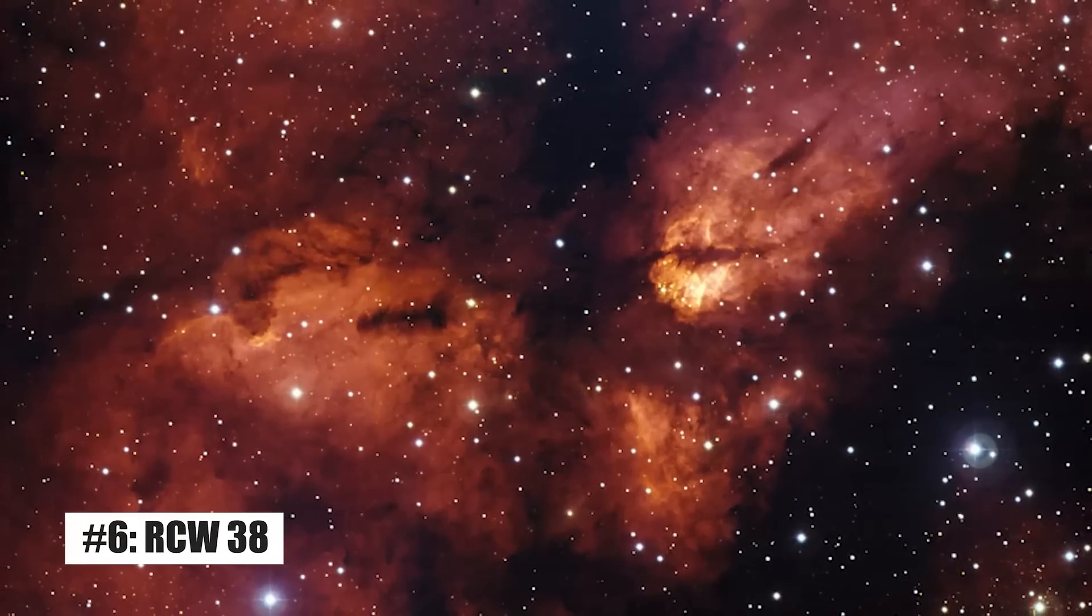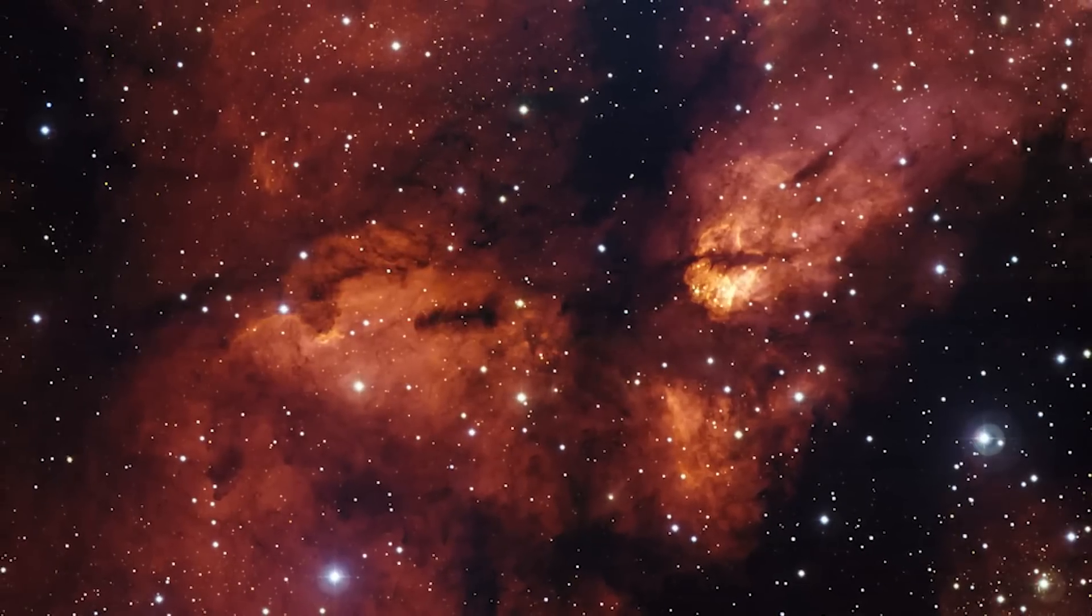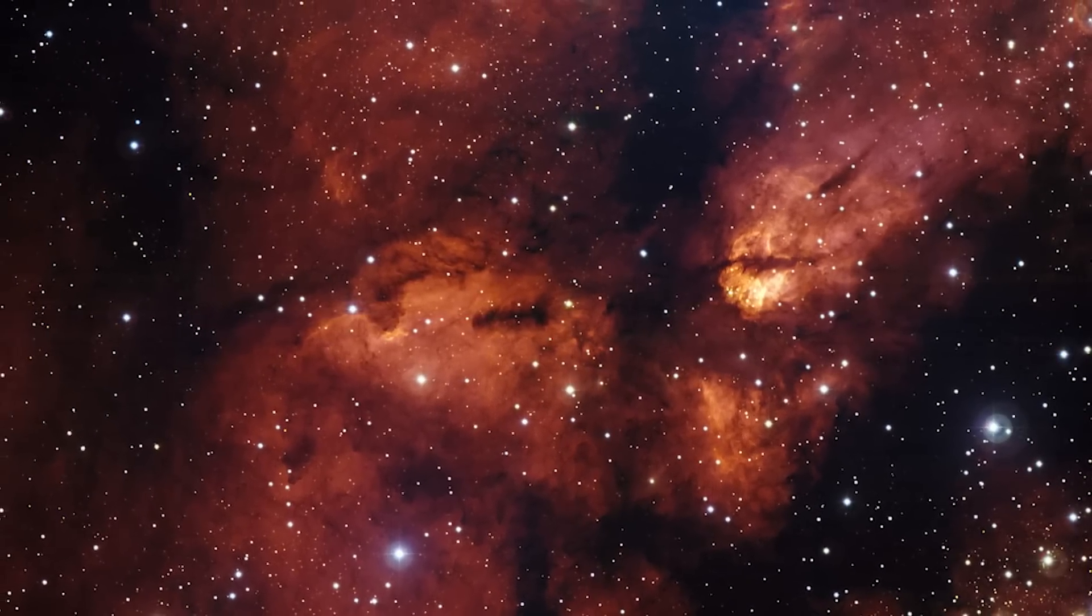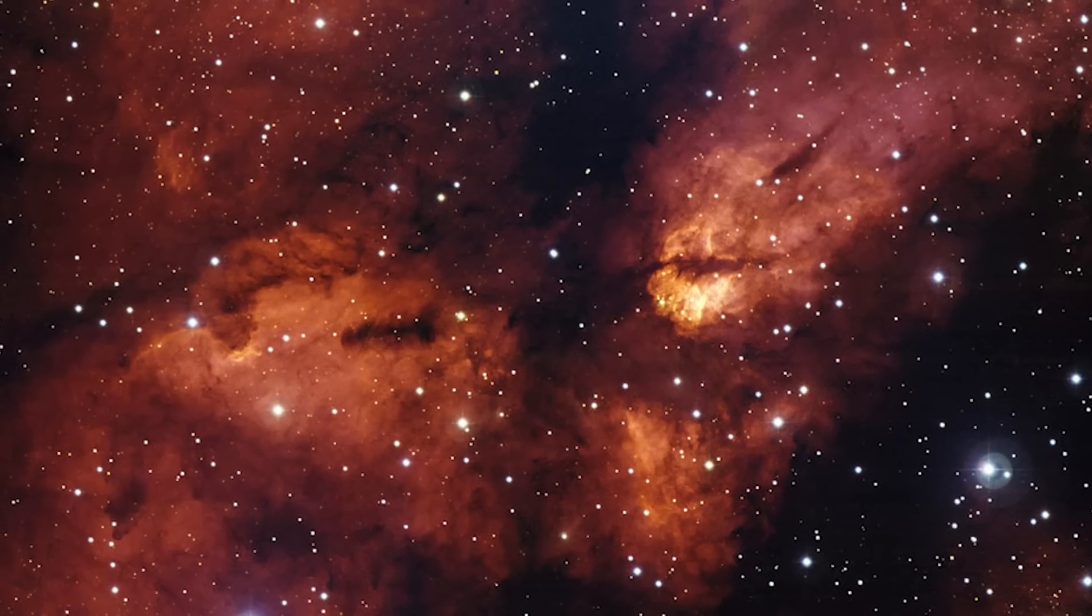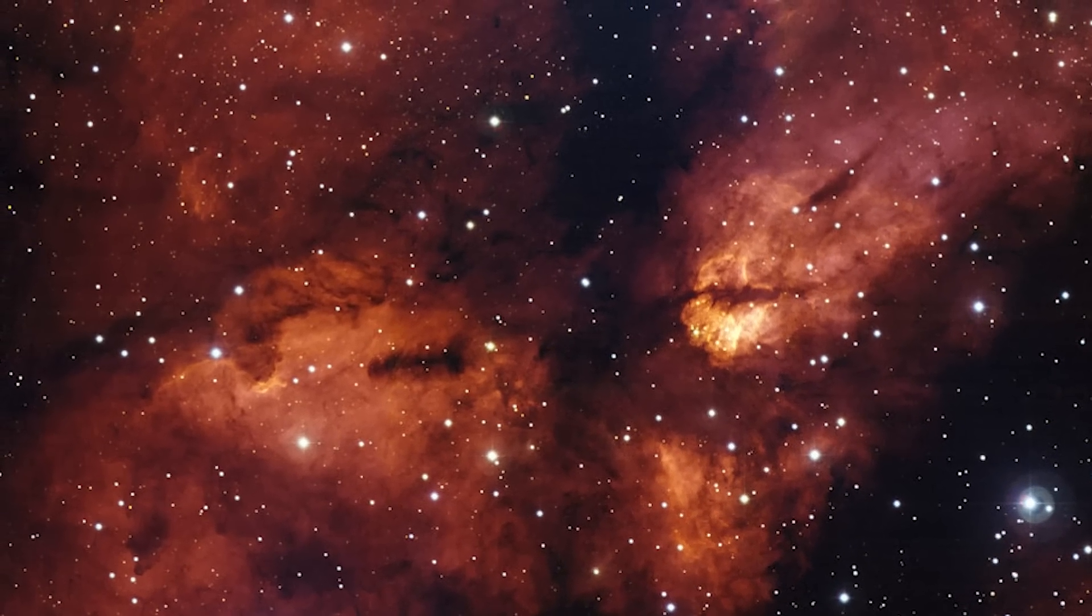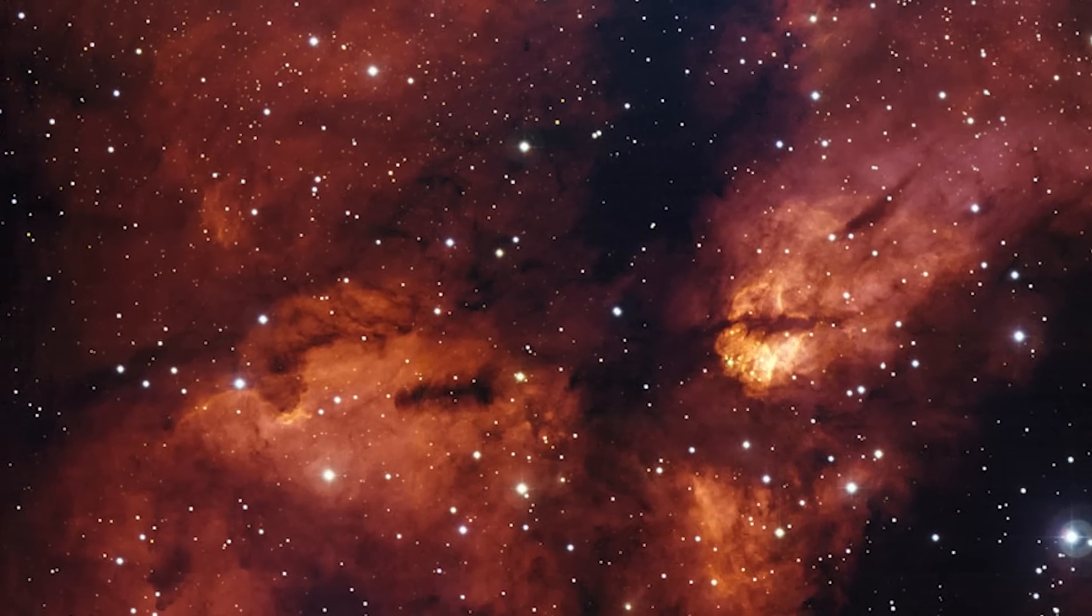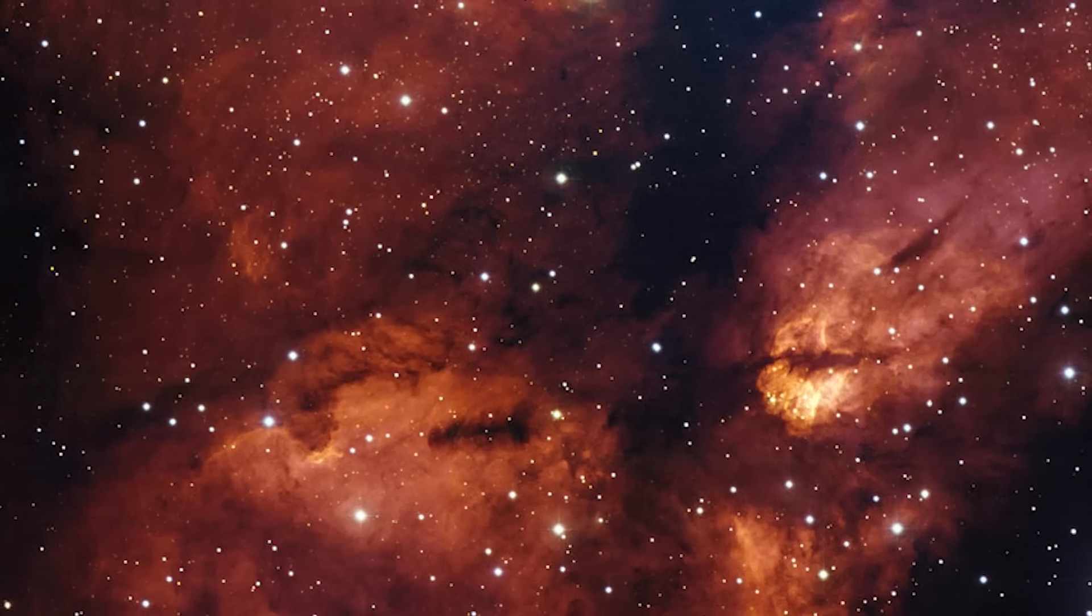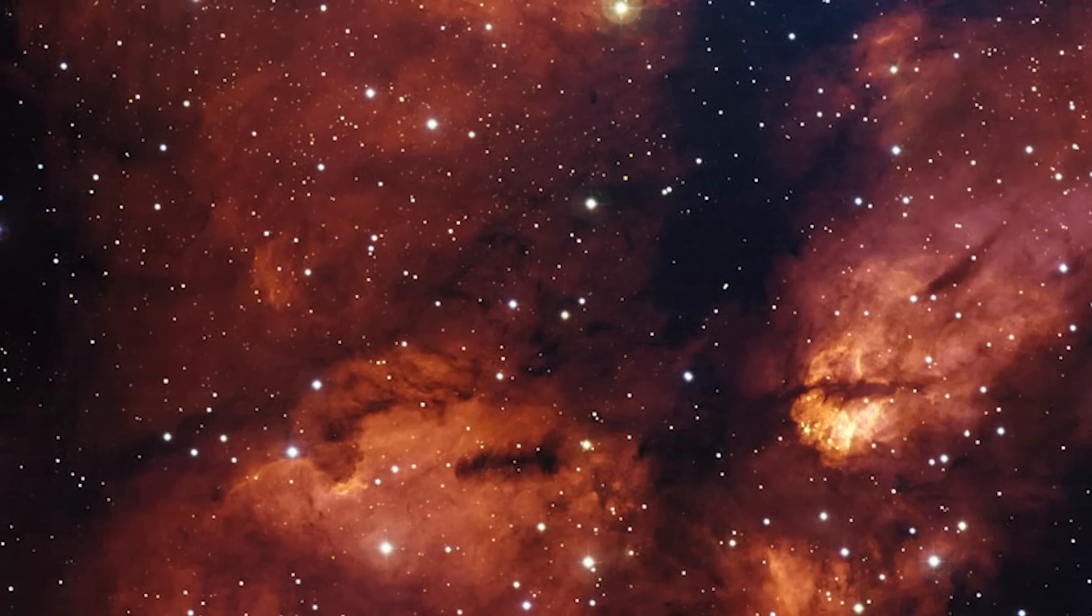Number 6. RCW 38. RCW 38 is a star cluster located in the direction of the constellation Vela, some 5500 light years away. RCW 38 is an embedded cluster because it is still surrounded by a cloud of dust and gas that is still forming. There, newborn stars and planets are bombarded by powerful winds and a flood of light from young, massive stars. Huge stars with short lives aid these destructive stars by exploding as supernovae.